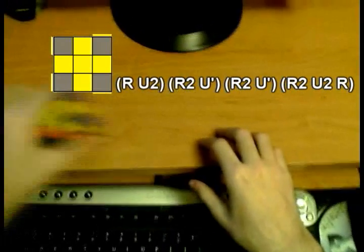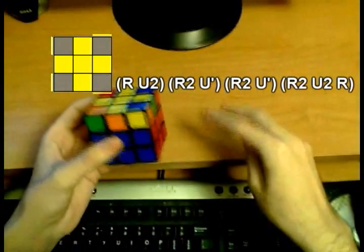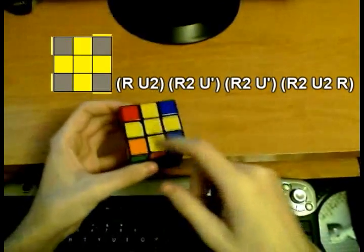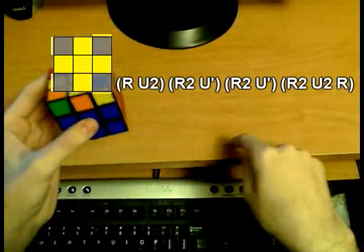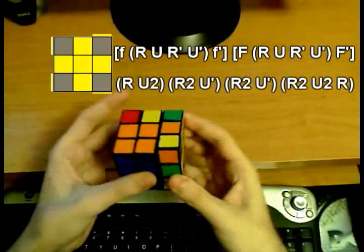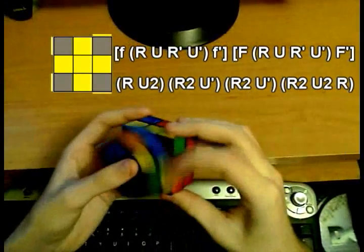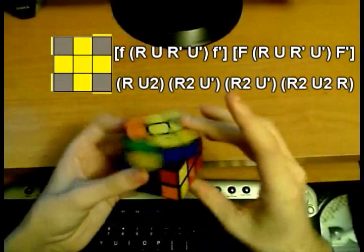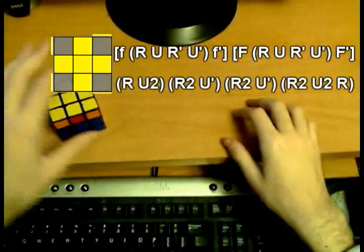Anyway, the lazy man's version is to use the two algorithms that I showed you for edge orientation. You do the second one and then the first one in sequence, and that will solve it. So if you do the second one, it's the small f R U R' U' small f', and then F R U R' U' F'. And that's all. So decide whichever one you want to use.